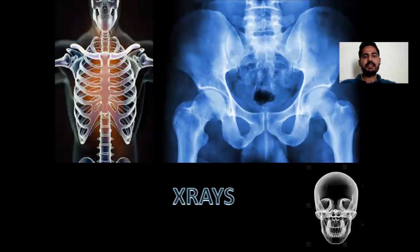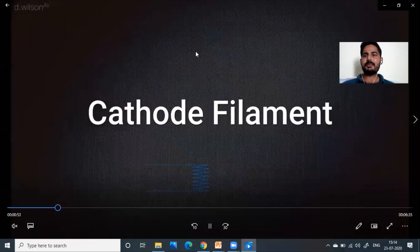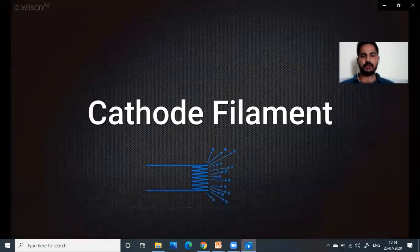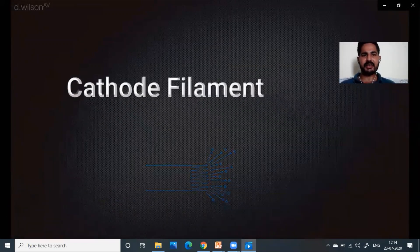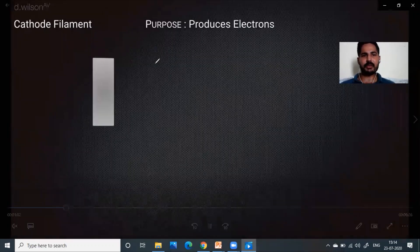Welcome back dear students. In this lecture we are going to understand x-rays. Let's begin our discussion by talking about the cathode filament, which carries some current, and due to heating it produces electrons from that filament.